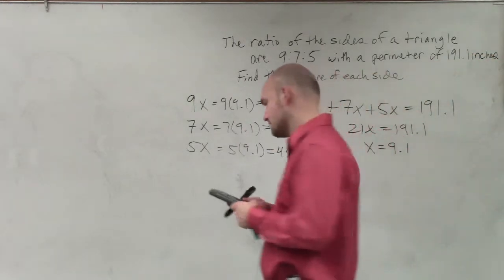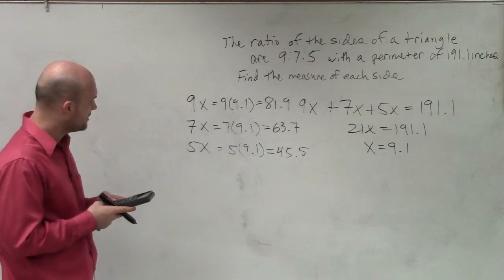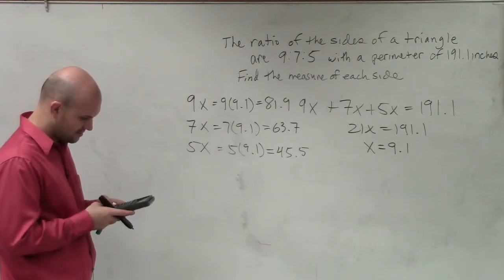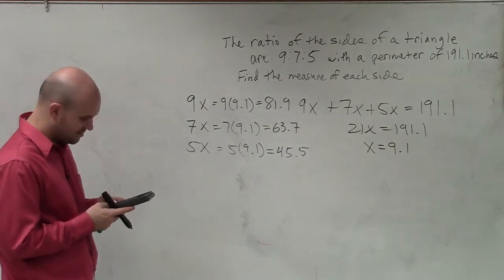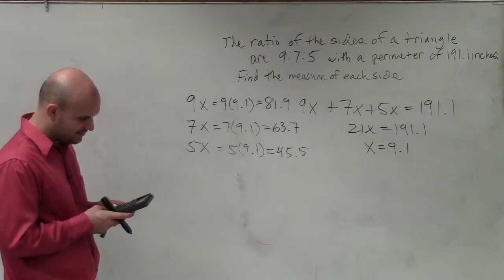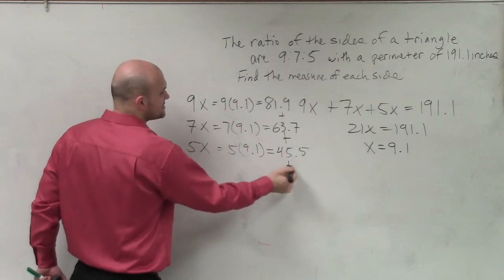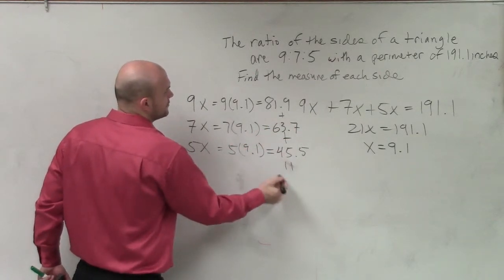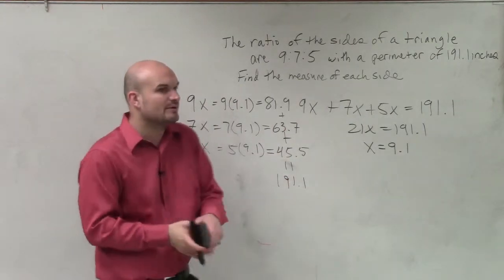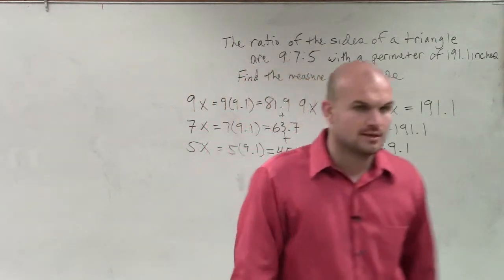So 81.9 plus 63.7 plus 45.5 gives us 191.1, which is equal to 191 — exactly what we want. Because it says find the actual measure of the sides where the perimeter equals 191.